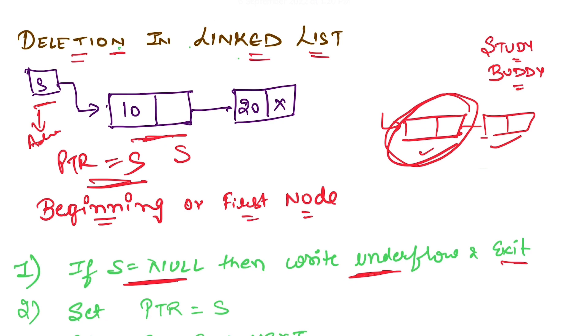For every node there is info part and next part. Next is having the address of the next node. So what we will do is we will just set s is equal to s.next, or sometimes it's written as next.